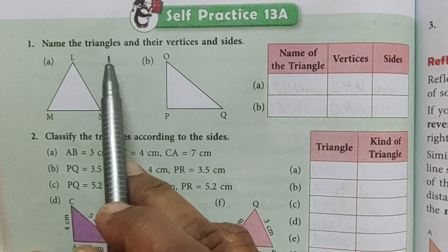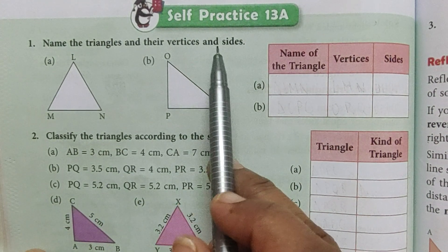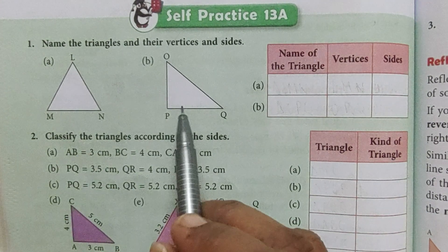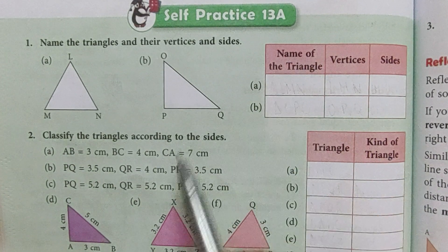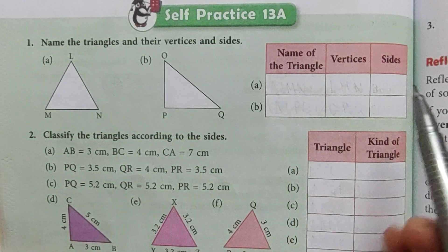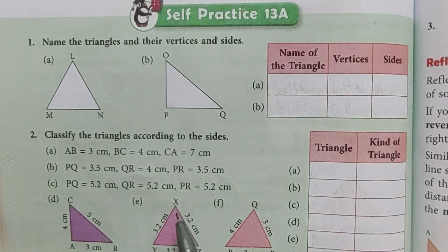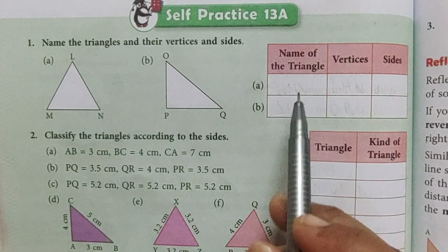Now question number one is name the triangles and their vertices and sides. We have to complete this table. We have to write the triangle's name, its vertices, and its sides.